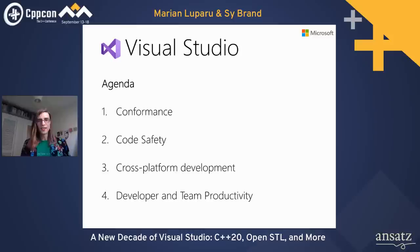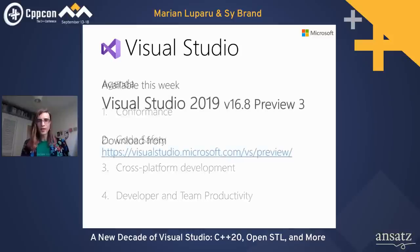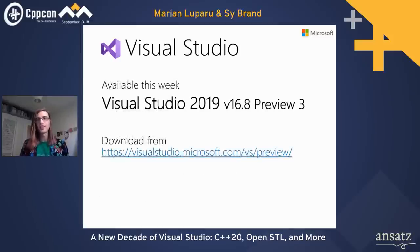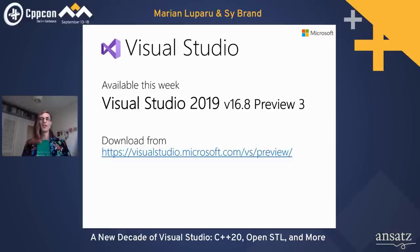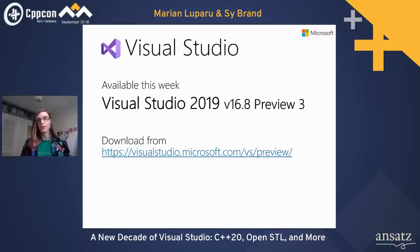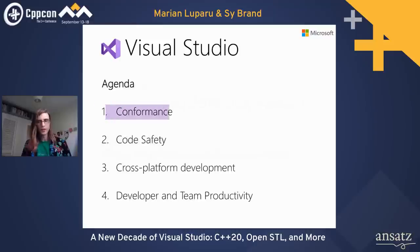Available this week is Visual Studio 2019 version 16.8 Preview 3 — our next big update. Preview 3 is where we have the majority of all our features and will give you a good idea of what to expect when 16.8 releases. You can download it from visualstudio.microsoft.com/vs/preview.